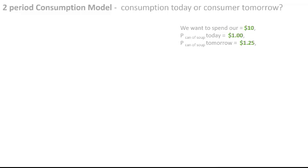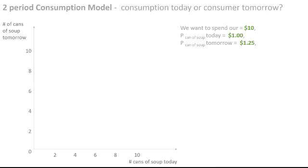The first thing we want to do is create our budget line. We're looking at cans of soup tomorrow on the horizontal axis and cans of soup today on the vertical axis. For tomorrow, with $10 of income and a price of $1.25 a can, we can buy eight cans. Today, with $10 and soup at $1, we can buy ten cans. We join the two points and this represents our budget line.